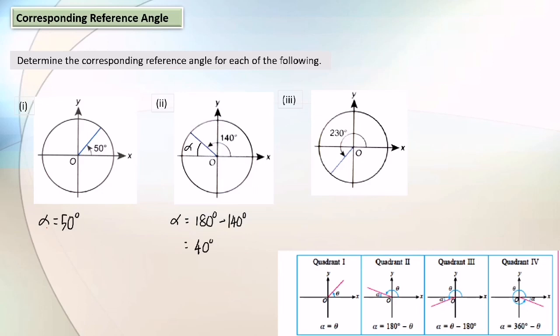The third one: the angle is in the third quadrant. The corresponding reference angle is here on the x-axis. To find this angle: 230 degrees minus 180 degrees equals 50 degrees.